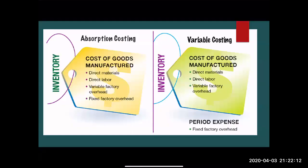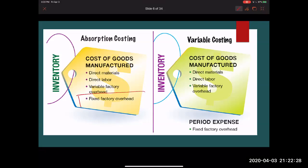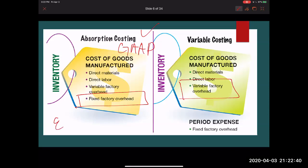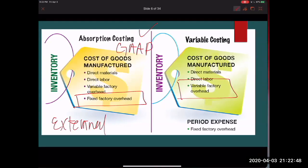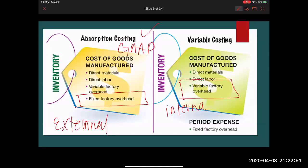For visual learners, here's a good depiction of the difference between absorption costing versus variable costing. Everything looks pretty much the same until you get to fixed factory overhead. Under absorption costing — which is GAAP-approved and sent to external parties like the IRS — fixed factory overhead is included. Under variable costing, which is for internal use, fixed factory overhead is treated as a period cost: we expense it in the period it is incurred and only look at the variable portion.